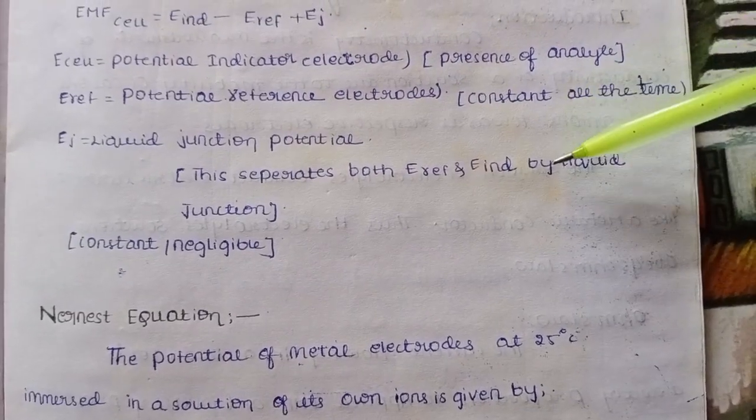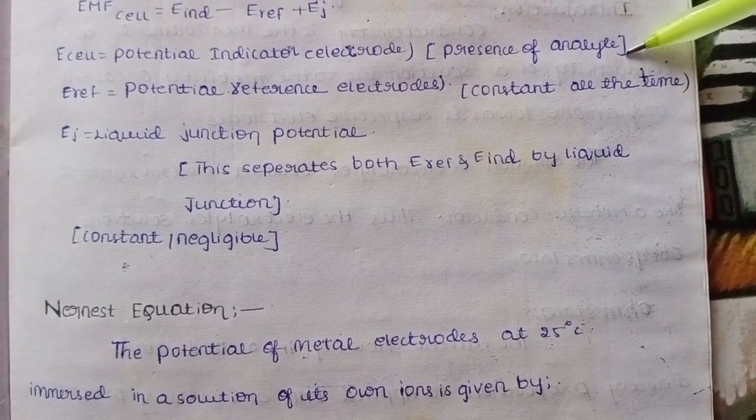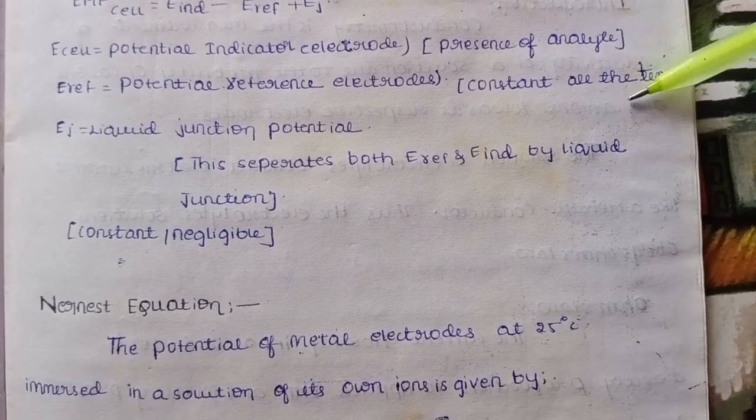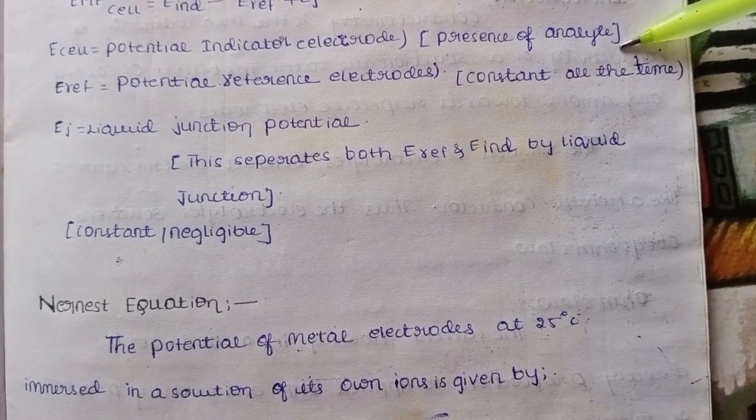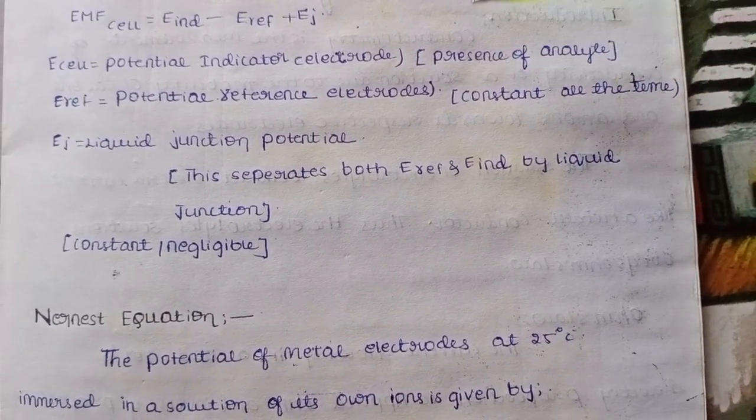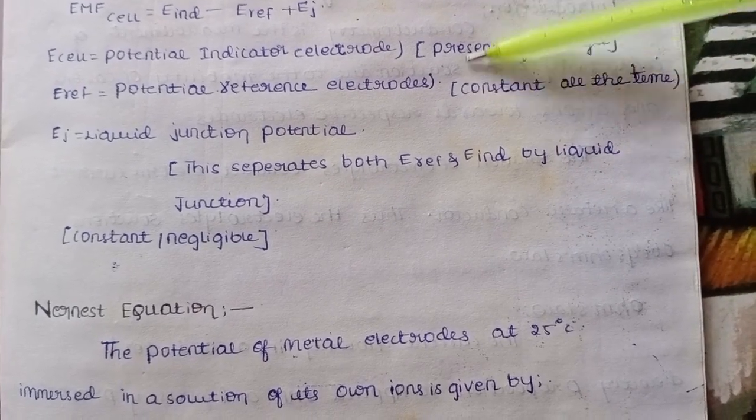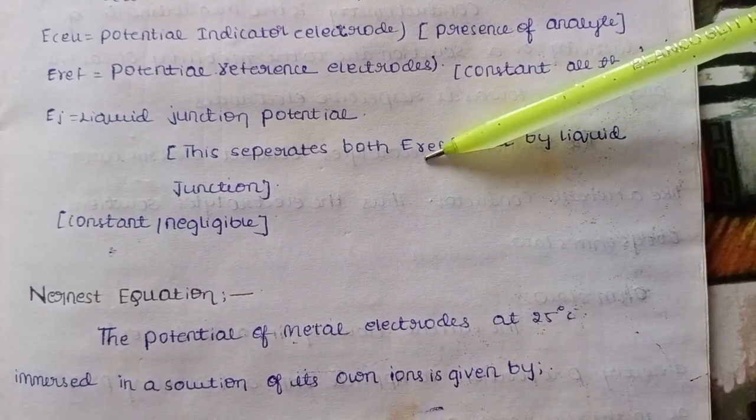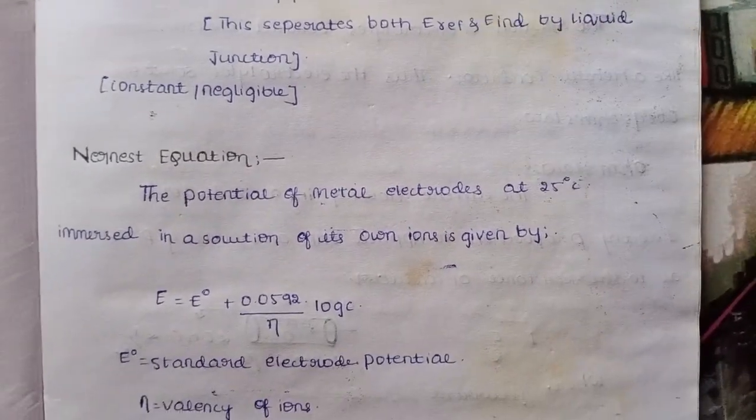E indicator - presence of analyte gives this value. E reference is constant over time. E junction - when the indicator electrode and reference electrode are separated, there's a liquid junction. This has a constant value or is negligible and considered zero.